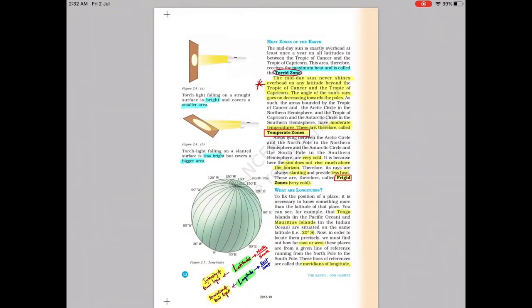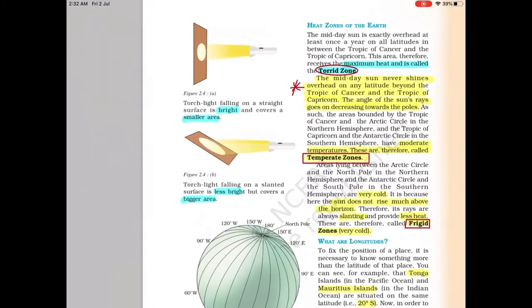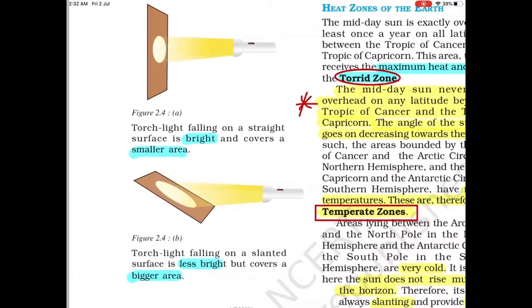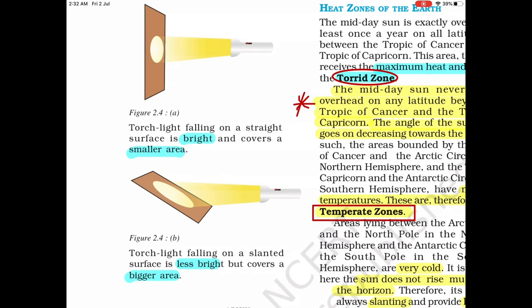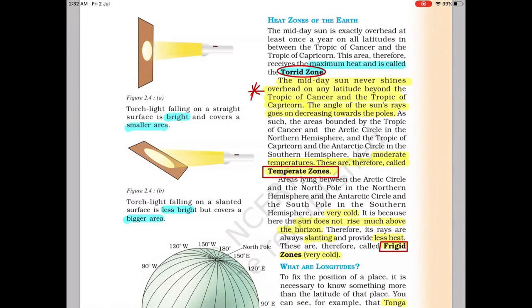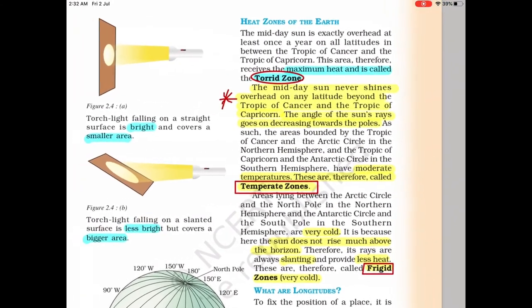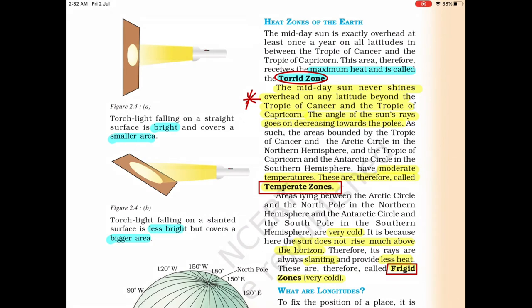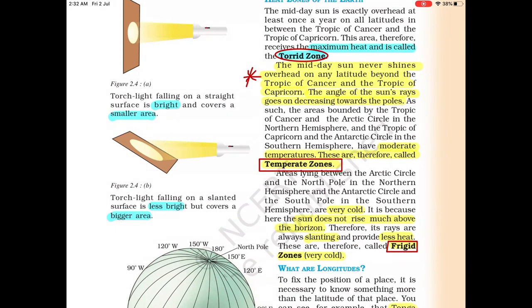Before going to the heat zones of the Earth, let's discuss this diagram. In the first picture, light from a torch falls directly on the cardboard where it is brighter and the illuminated area is smaller. In the second picture, because of the inclination and slantness, the light is less bright but the illuminated area is bigger. This same effect happens to the Earth from the Sun. There are three heat zones: Torrid zone, Temperate zone, and Frigid zone.